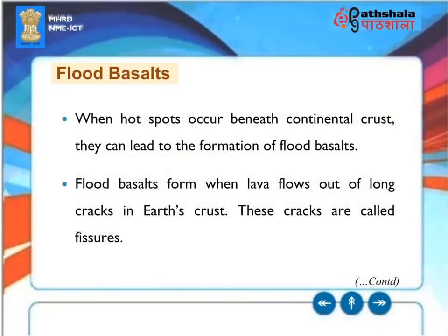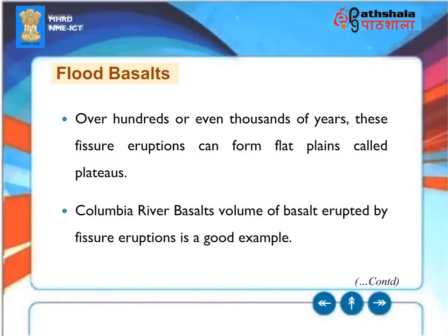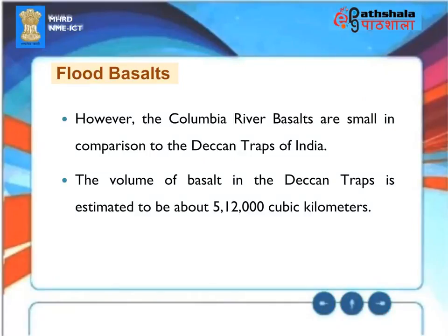Flood basalts. When hotspots occur beneath continental crust, they can lead to the formation of flood basalts — formed when lava flows out of long cracks in Earth's crust called fissures. Over hundreds or thousands of years, these fissure eruptions can form flat plains called plateaus. The Columbia River basalts are a good example of basalt erupted by fissure eruptions, but they are small in comparison to the Deccan Traps of India, whose volume of basalt is estimated to be about 512,000 cubic kilometers.